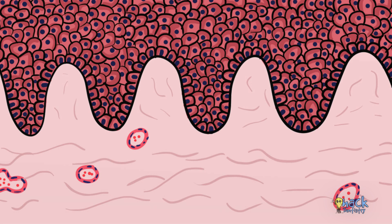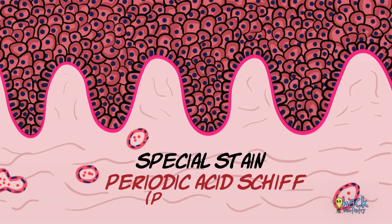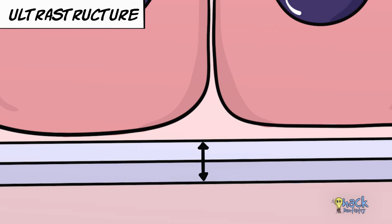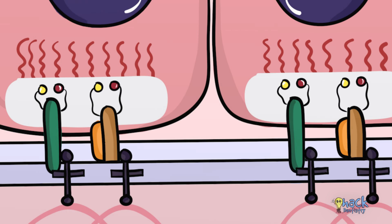In the light microscope, when the tissue is stained with a special stain called periodic acid Schiff, the basement membrane can be visualized as a thin line between the epithelium and the connective tissue. This basement membrane at the ultrastructural level is called the basal lamina and consists of two layers called lamina lucida and lamina densa. The basal lamina consists of proteins making the hemidesmosomal junctions.